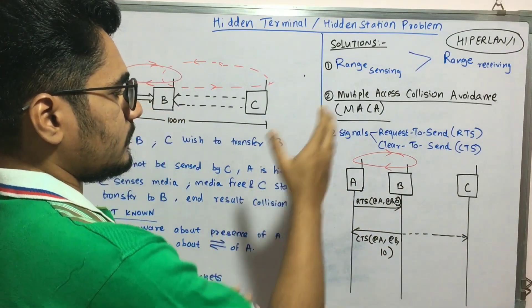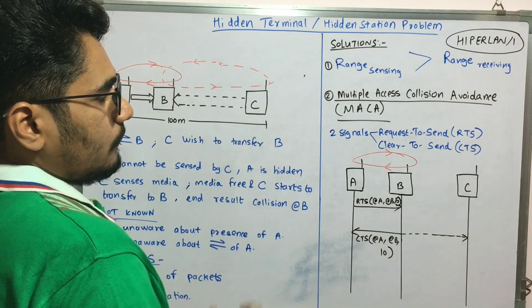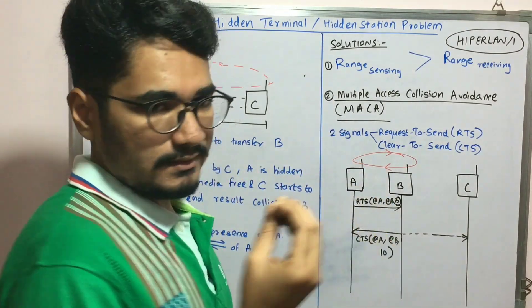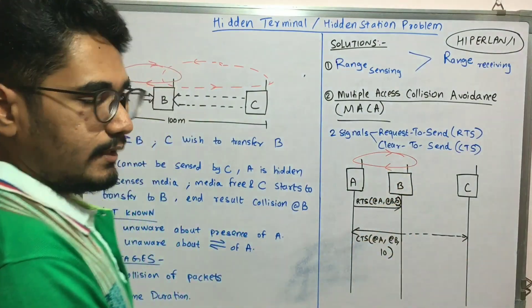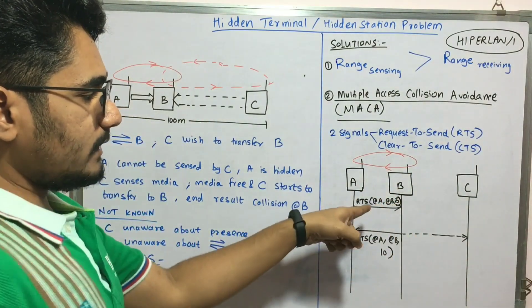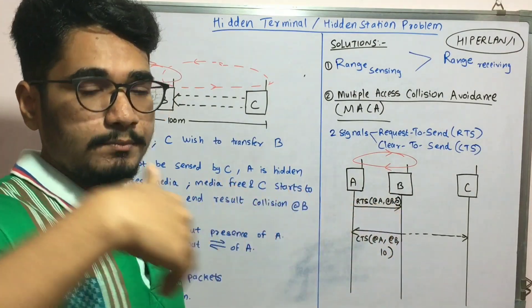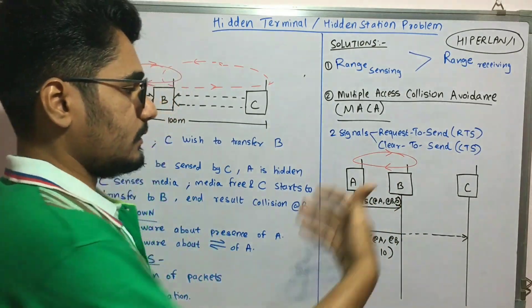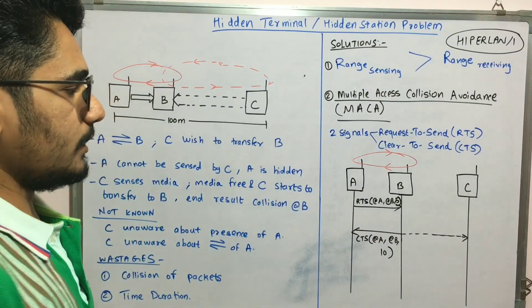Basically what happens is first of all A will communicate with B. For that, it will send an RTS signal. Now RTS signal contains a triplet: it will contain the sender's address, recipient's address (I have denoted with @A and @B), and for how much time the future transmission will occur, say for example after five hours they are going to do the communication again.